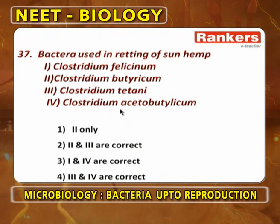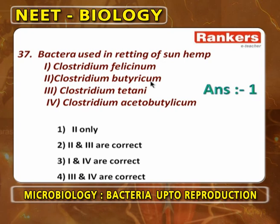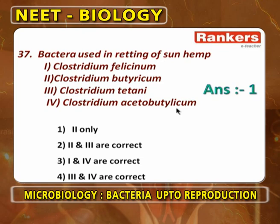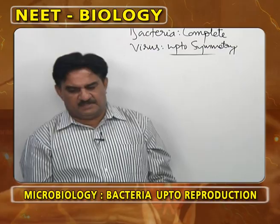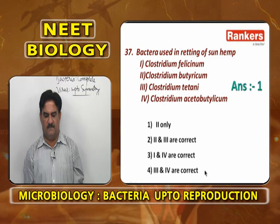Bacteria used in retting of sunhemp are Clostridium felsineum and Clostridium butyricum — 1 and 2 are the answer. Clostridium tetani causes tetanus. Clostridium acetobutylicum forms the source of acetone and butanol. Answer is 1.